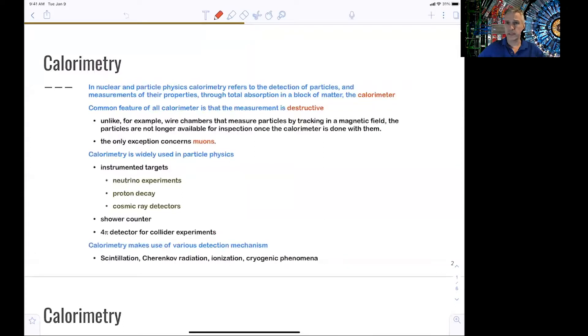And in collider experiments specifically, the idea is to build the detector such that it completely surrounds the interaction region, such that you don't lose energy from the collision just passing through an uninstrumented region. The detection mechanism can vary quite a bit. We use scintillators a lot. We use silicon in some modern detectors. We use ionization, Cherenkov detection, and sometimes cryogenic detectors, which are very sensitive to very small energy depositions. They are used in dark matter experiments or in neutrinoless double beta decay experiments, for example.